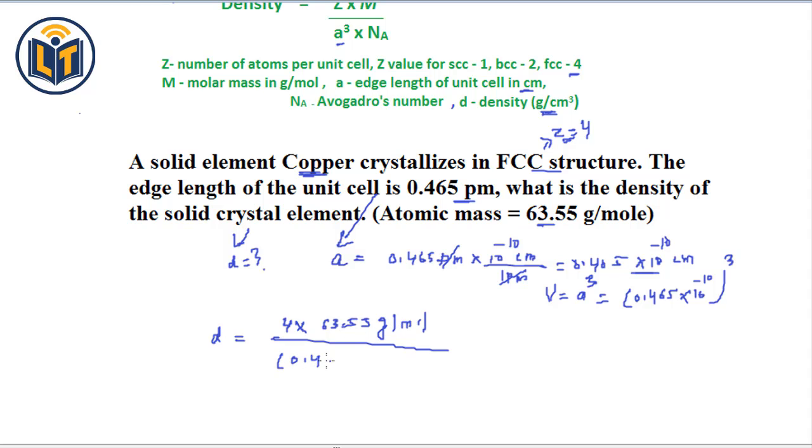You can plug in here 0.465 multiplied by 10 to power minus 10 raised to power 3, multiplied by Avogadro number. Avogadro number that is 6.0 multiplied by 10 to power 23. In this expression, you can see that D is the only variable unknown. And so, here you can see that the values are given. We can do the multiplication and find out D value.